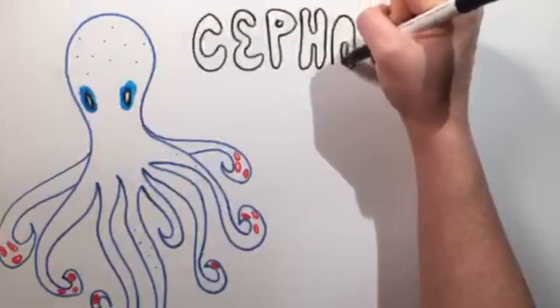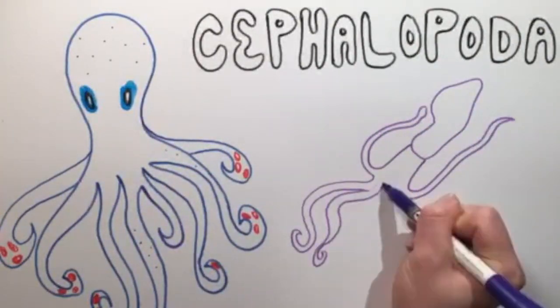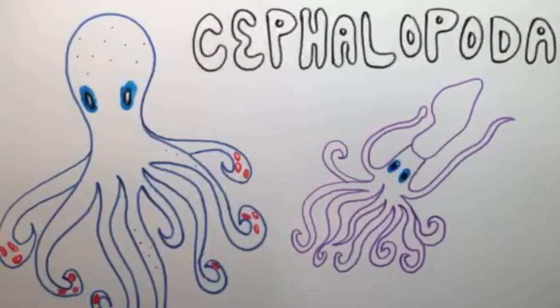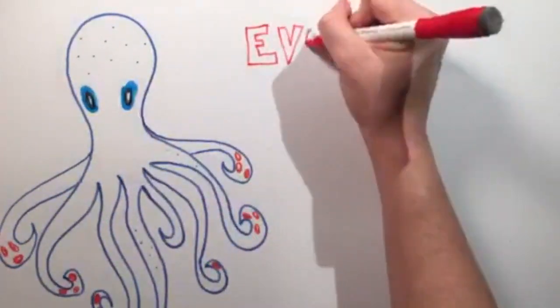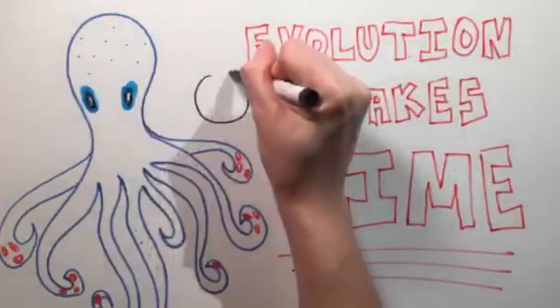Octopuses are part of a larger class of organisms, cephalopoda. This class includes not only octopuses, but also squid and cuttlefish. These organisms have evolved specialized sensors that help them thrive in their underwater environment.